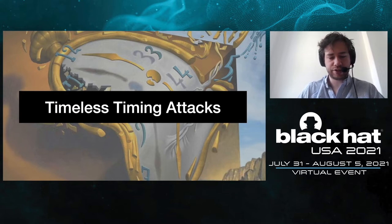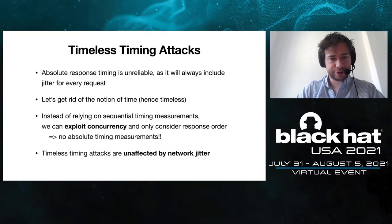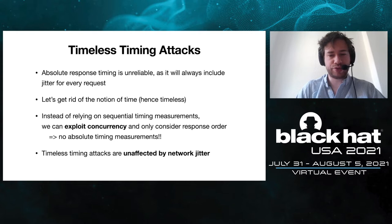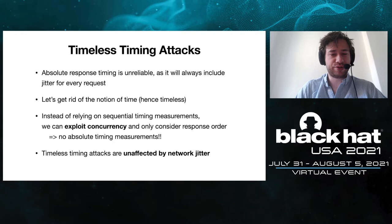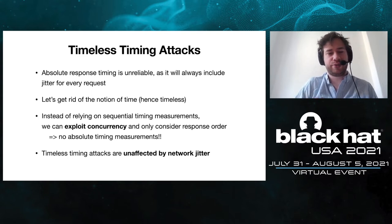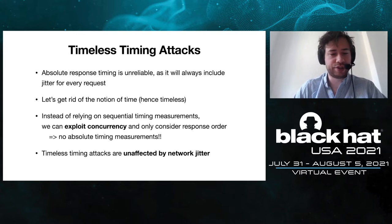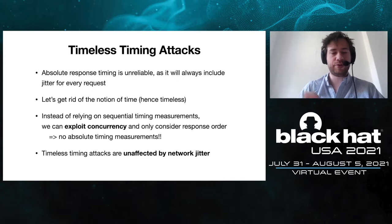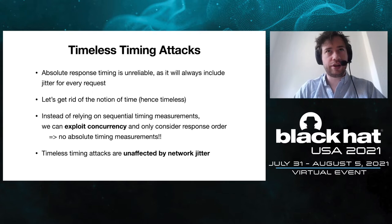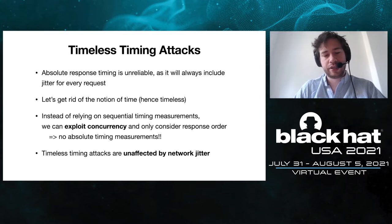This brings us to timeless timing attacks. Since absolute response timing is unreliable because every request includes jitter, we thought: why not get rid of the notion of time entirely? Instead of measuring time, we exploit concurrency — we send two requests at the same time and look at their response order. This means we don't need absolute timing measurements, and as a result these timeless timing attacks are completely unaffected by network jitter.